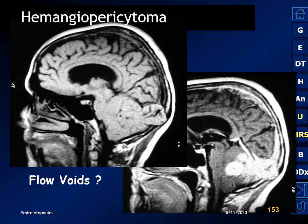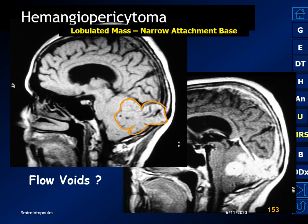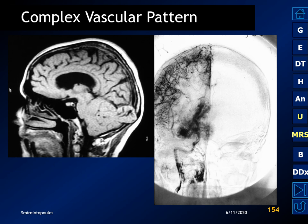Hemangiopericytomas are much more likely to be lobulated masses, much more likely to have very prominent flow voids, and much more likely to have a narrow rather than a broad base of dural attachment. Angiographically, hemangiopericytomas will show a much more complex vascular pattern and will not have the spokewheel vascularity seen in meningiomas.